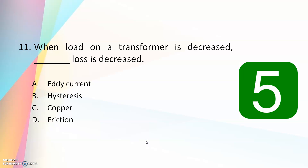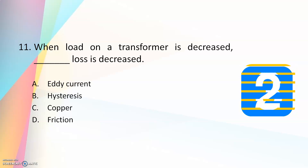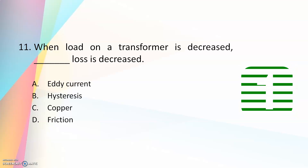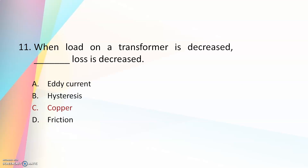Eleventh question: when load on a transformer is decreased, which loss is decreased — eddy current, hysteresis, copper, or friction? The answer is copper loss. Copper loss is proportional to the square of current — copper loss equals I²R, where I is the current and R is the resistance of the winding. As the load current is decreased, copper loss is also decreased.